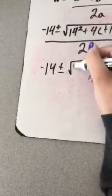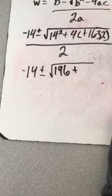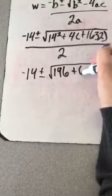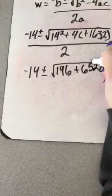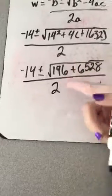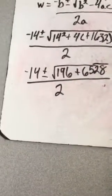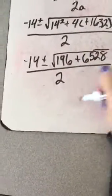196 plus 4 times 1632 is 6528, and then that's just divisible by 2. 196 plus 6528 is 6724, and that's divisible by 2.